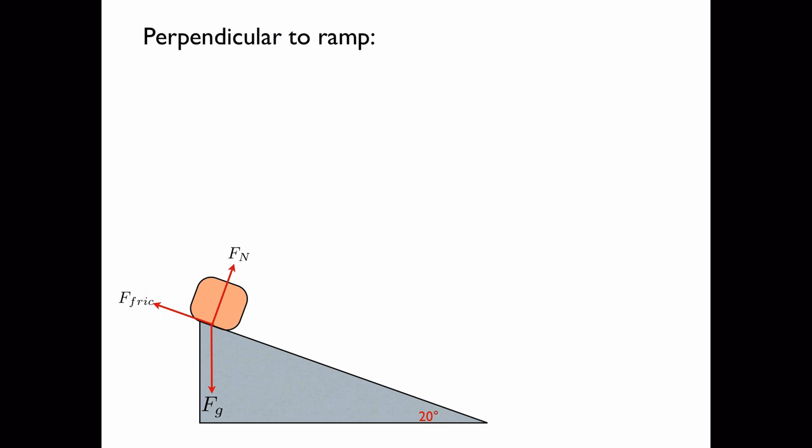Now we'll look at the forces perpendicular to the ramp. The normal force is, by definition, perpendicular to the ramp. So we have the component perpendicular is just equal to the normal force itself. Which we figured out a couple slides ago to be 46 newtons.